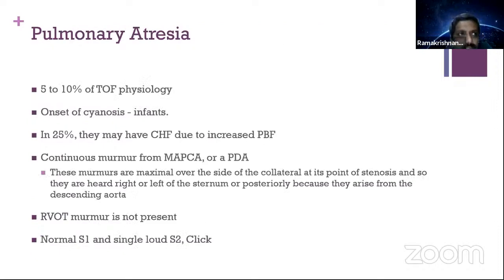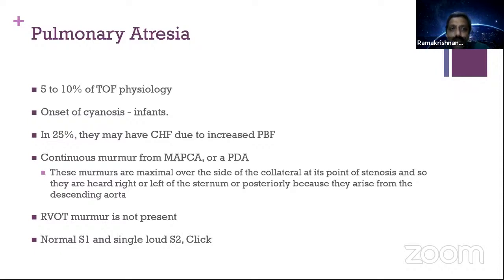Another variation you will see in an adult is pulmonary atresia. When do you suspect it? Very simple — when the patient is very blue, you don't find an RV outflow murmur, and you find collateral murmurs everywhere in the back. When you find a continuous murmur of a PDA or MAPCA, think of pulmonary atresia. It can account for 5–10% of tetralogy physiology. Onset of cyanosis is generally in infancy, but sometimes presents with heart failure due to increased pulmonary blood flow. The murmurs of MAPCA and PDA are heard at the site of the collateral, at the point of stenosis — heard to the right and left of sternum or posteriorly. The RV outflow tract murmur is not present.